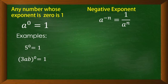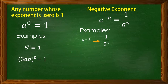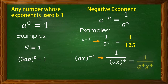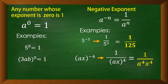Negative exponent: a raised to negative n — to simplify, use the positive exponent n and take its reciprocal, so that equals 1 over a raised to n. For example, 5 raised to negative 3 — use the positive exponent 3 and take its reciprocal — equals 1 over 5 raised to 3, or 1 over 125. Same as (ax) raised to negative 4 — use the positive exponent 4 and take its reciprocal — equals 1 over (ax) to the power of 4, which is 1 over a raised to 4 times x raised to 4.